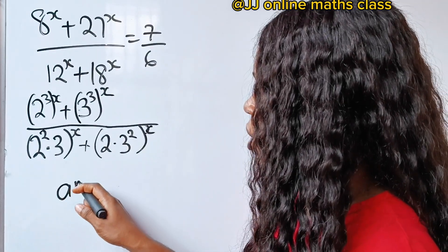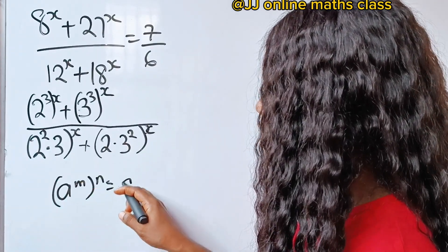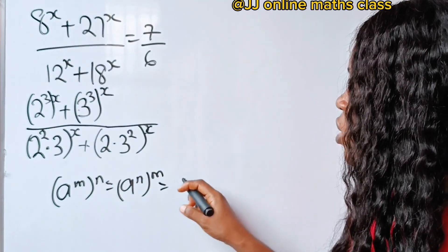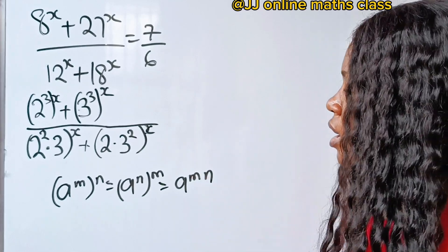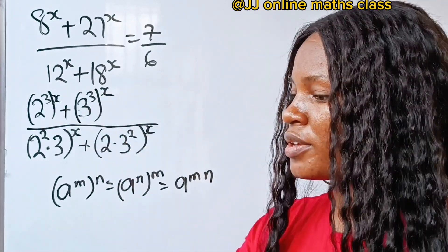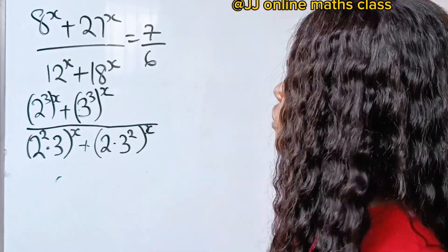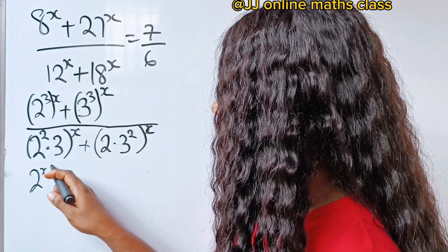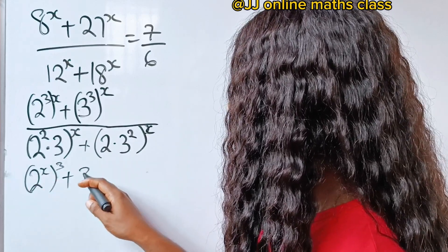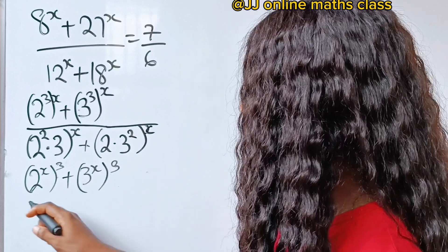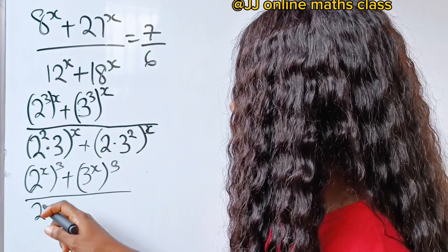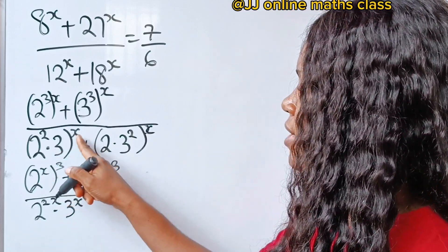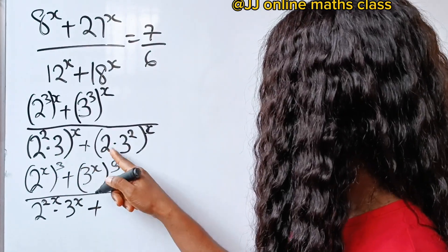Recall that a to the power of m raised to the power of n is the same as a to the power of n raised to the power of m, since this equals a to the power of m times n. So let's use this in the numerator. We can write 2 to the power of x raised to the power of 3, plus 3 to the power of x raised to the power of 3, divided by 2 to the power of 2x multiplied by 3 to the power of x.